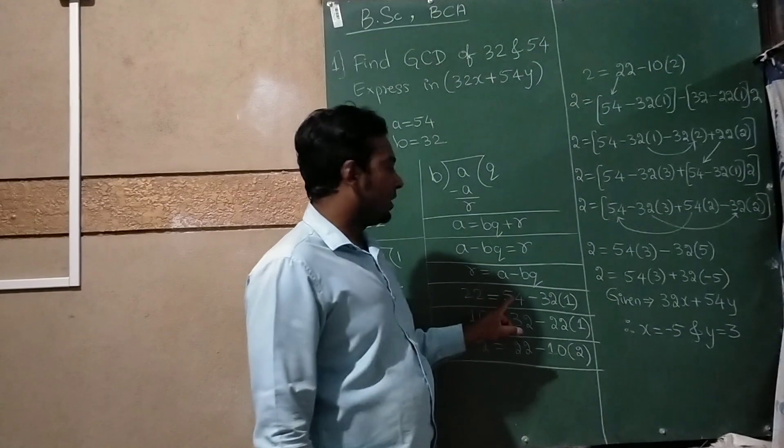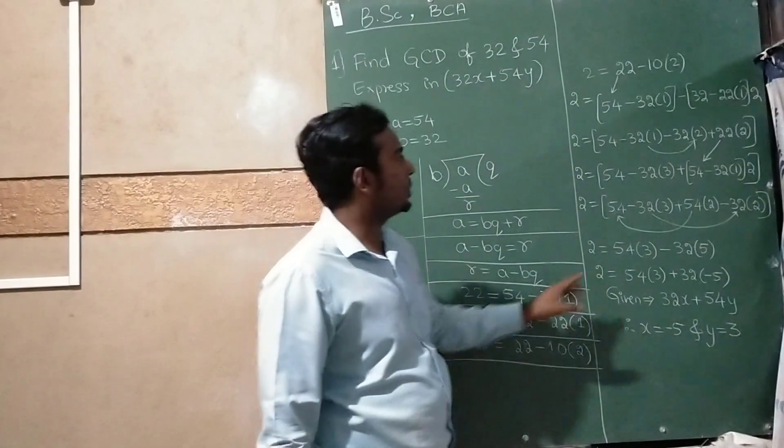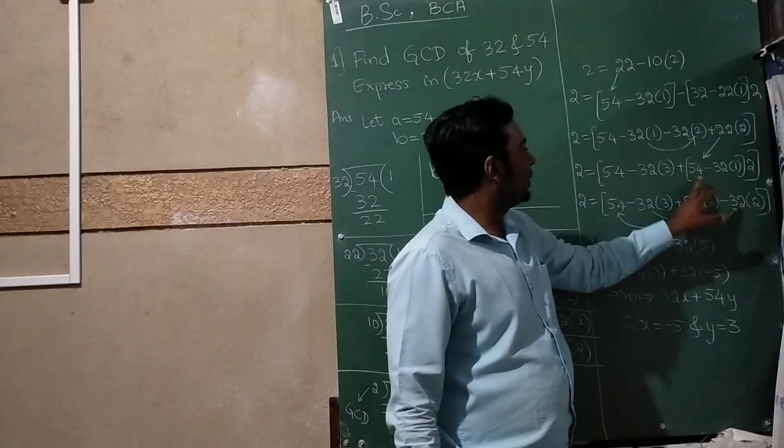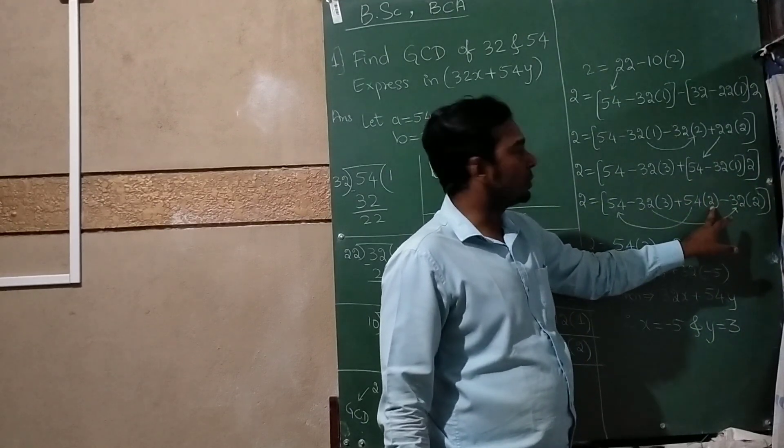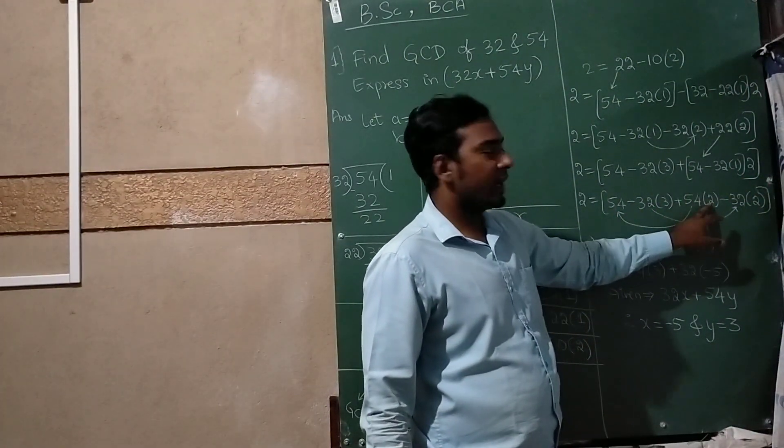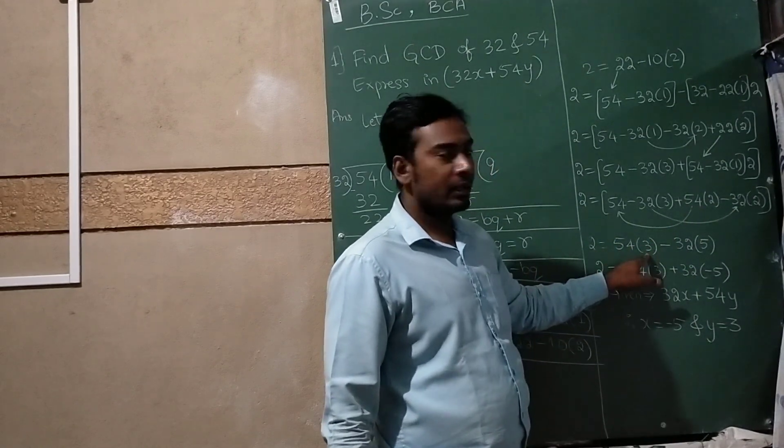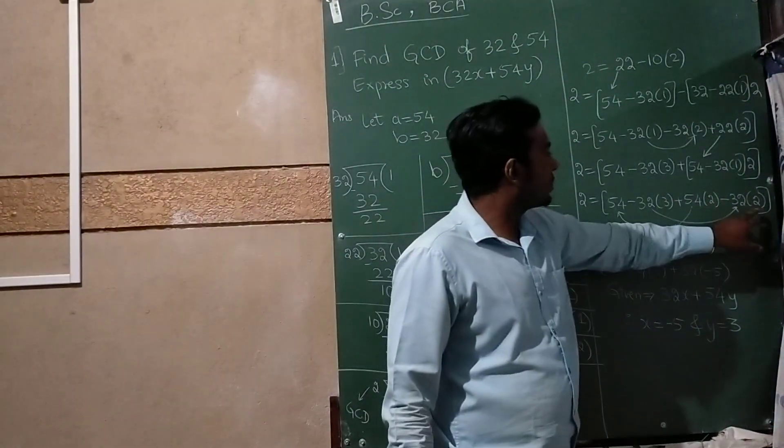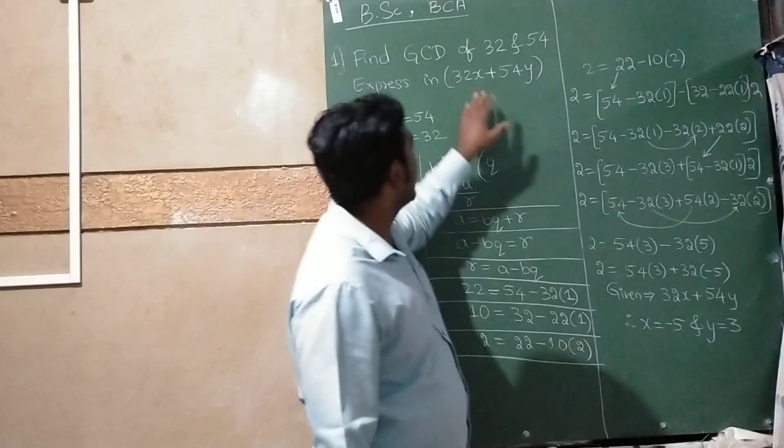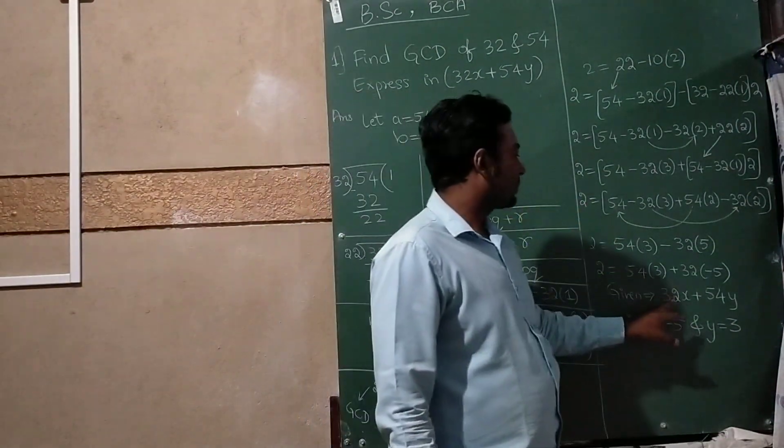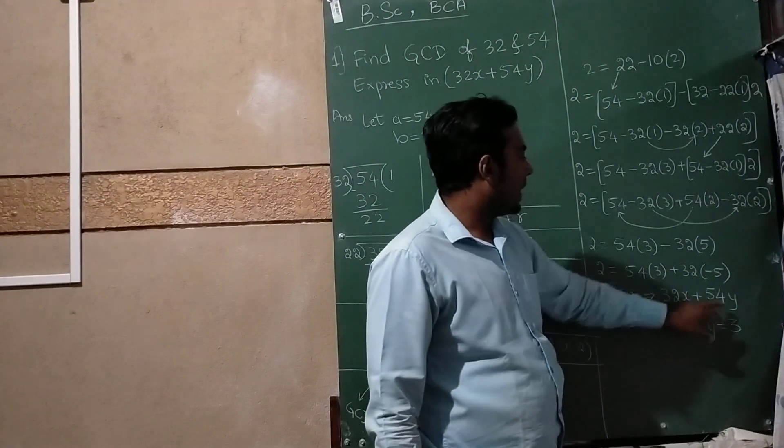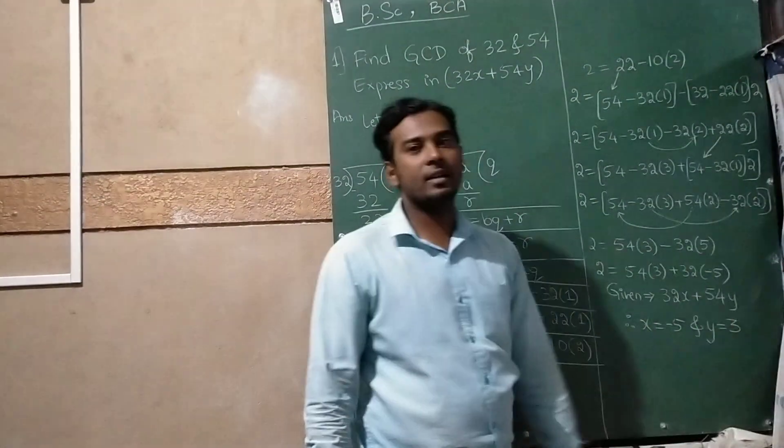This and this, 1 plus 2 is 3, so 54 as is, and 22 is 54 minus 32, giving 2 equals 54 in bracket 2 minus 2 times 32. So 54 in bracket 3 minus 32 in bracket 5. Equating to the given equation 32x plus 54y, x value becomes minus 5 and y becomes 3. This completes your answer. Thank you.